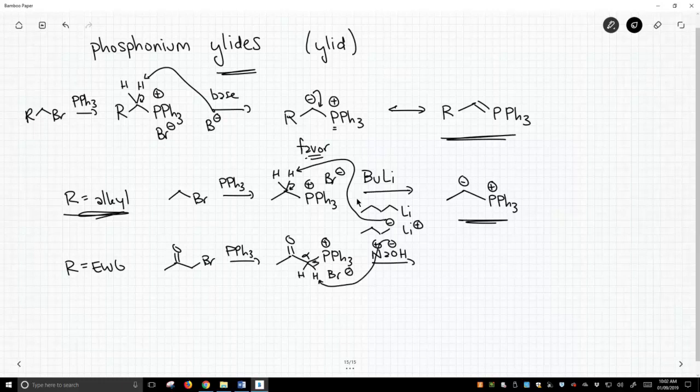So, what base you need to use depends on what the substitution is on the phosphonium salt. If you put electron withdrawing groups on there, acidity increases. If it's just an alkyl group, you've got to bring out the big guns and bring in something like butyllithium. But, we can deprotonate these and make these phosphonium ylids. These open up an entire branch of new chemistry, and we'll talk about in a later video.